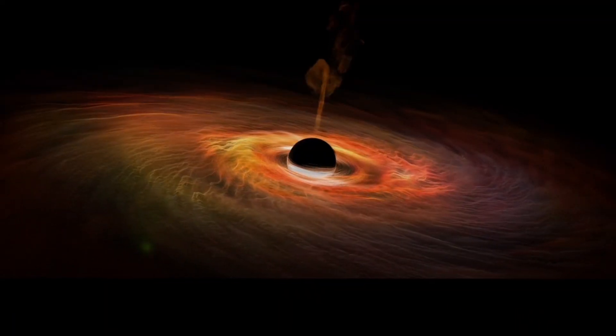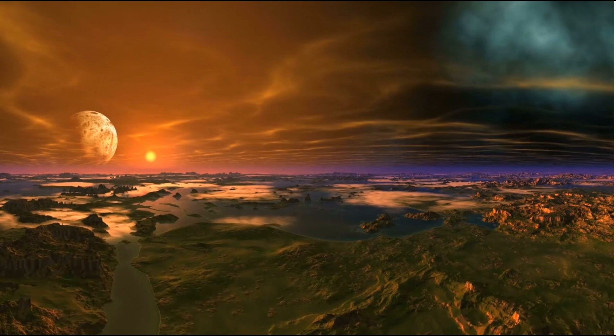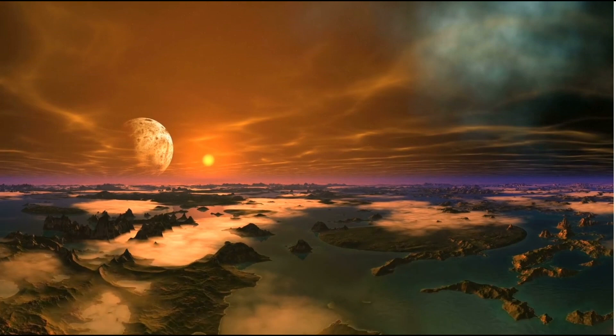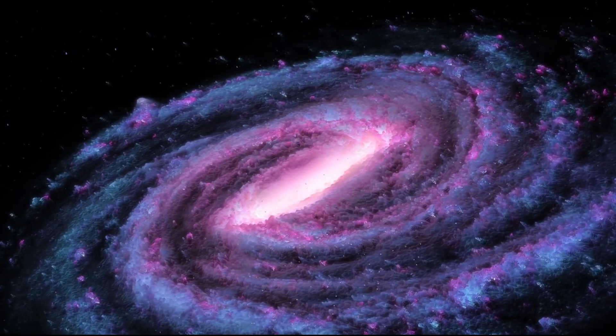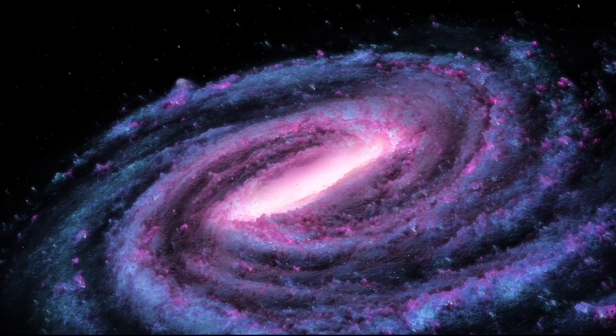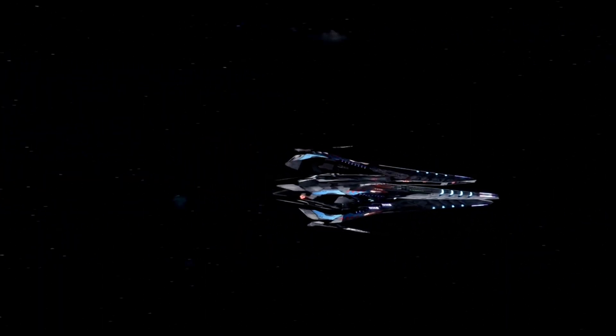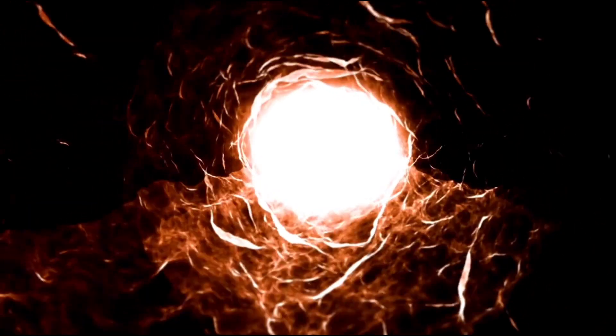Iron-60, the radioactive isotope produced during supernovae, has been detected in Earth's oceans and in lunar soil samples. This discovery suggests that Earth has been exposed to the remnants of a supernova explosion in the not-so-distant past, possibly within the last few million years. Although astronomers currently do not see any supernovae within a threatening distance from Earth, the detection of iron-60 raises concerns about the potential hazards of a nearby star's explosion. These findings highlight the need to closely monitor the stars that reside within our galaxy.